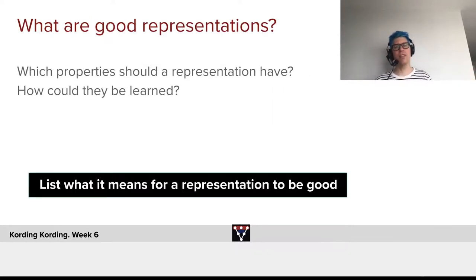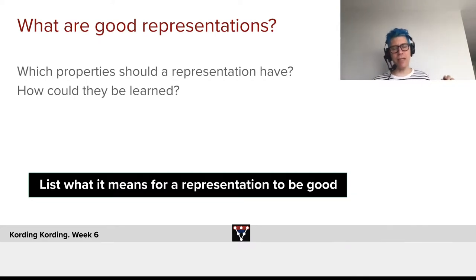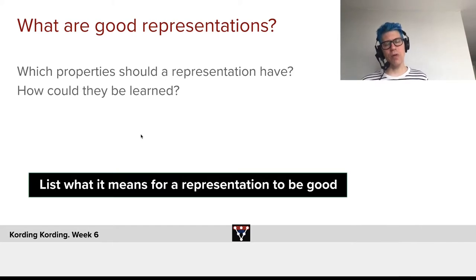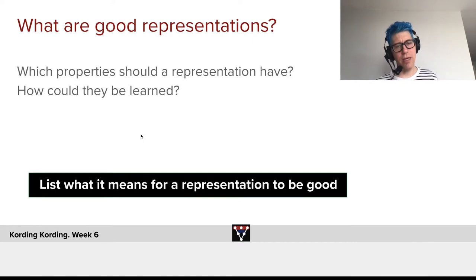What are good representations? I have something in the outside world, and I represent it as a vector of activities. Each element in that vector tells us something about what's out there. There's no doubt that some representations of the world are more useful than others. If I encrypt them, they are maximally useless. If I somehow figure out what's in there, they start to be very, very useful. So could I figure out that a given feature is a useful feature? If we learn representations, what would we want them to represent?